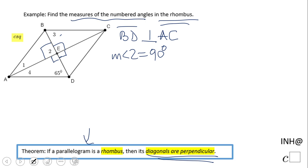Okay, so angle 2 is 90 degrees. Now how do I find the other angles? Let's look at this bottom triangle. Right, this is angle 4.